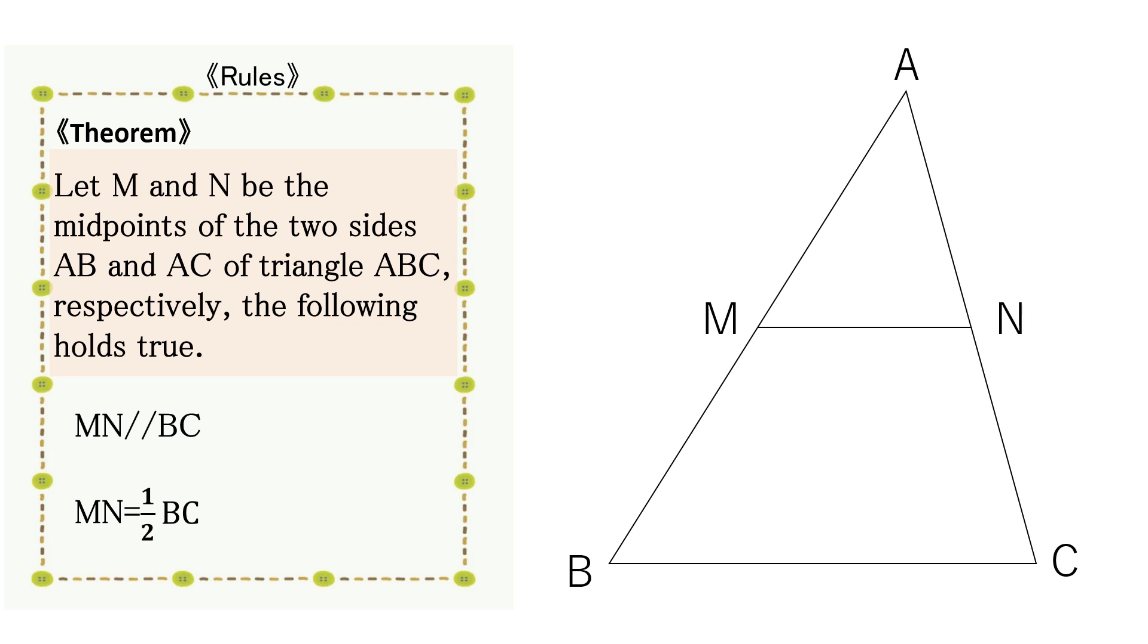In this case, the following two conditions hold true. The line segment MN connecting midpoints and side BC are parallel. The length of line segment MN is half of side BC.